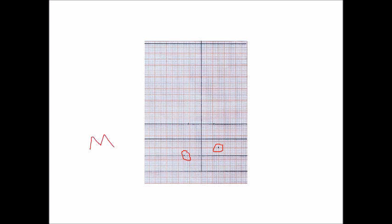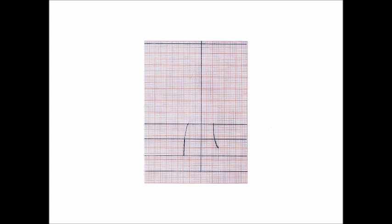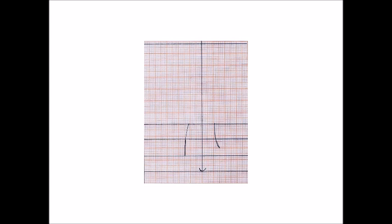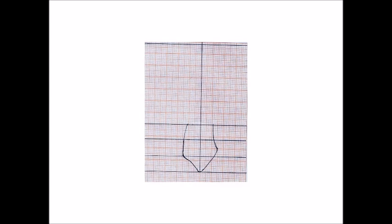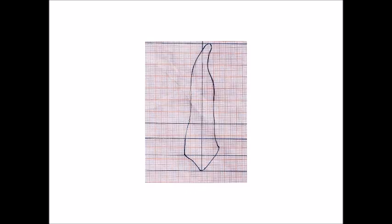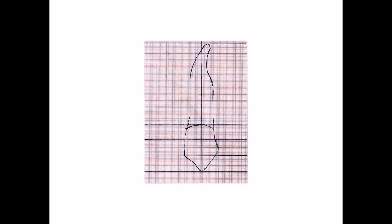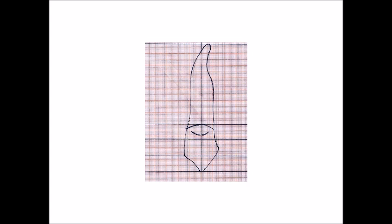It is a mirror image, but mesial and distal are reversed. I draw the two sides of the crown, mark the position of the cusp, draw the cusp slopes, the apex of the root, the cylindrical root, and the cervical line. Lingually, as with anterior teeth, there is a cingulum, which lies in the cervical third.